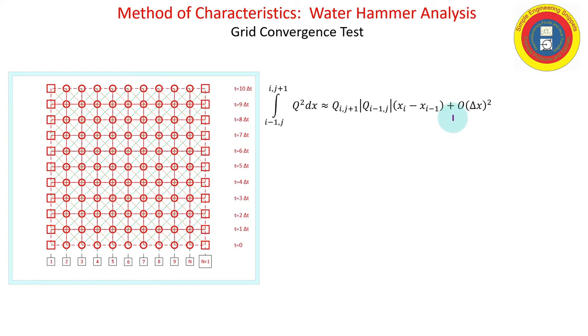And, again, to remind us is that this integral of q squared dx, which comes out of our method of characteristics, ODEs, that really is where we use an estimation, and our estimation should be second-order accurate.